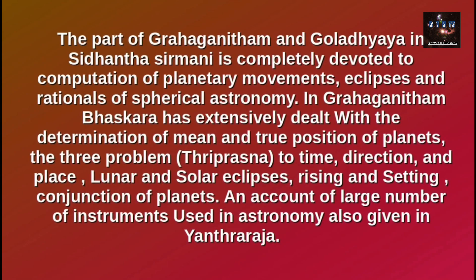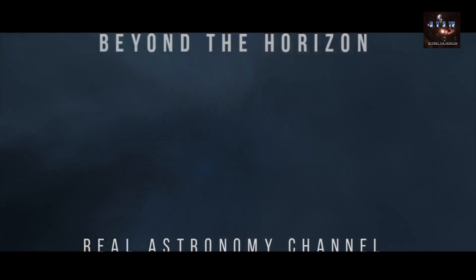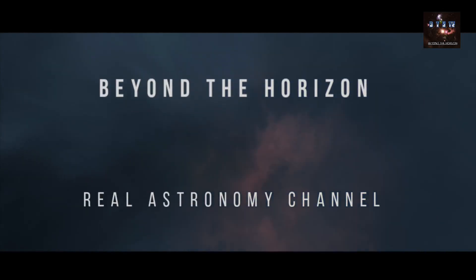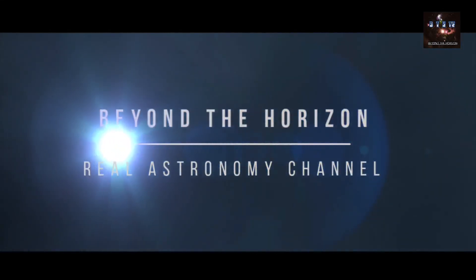The parts of Grahaganita and Goladhyaya in Siddhanta Shiromani are completely devoted to computation of planetary motions, eclipses, and the rationale of spherical astronomy. In Grahaganita, Bhaskara has extensively dealt with the determination of mean and true positions of planets. The three problems — Tri-Prasna, meaning time, direction, and place — lunar and solar eclipses, rising and setting of planets, and a large number of astronomical instruments are also covered. Thank you very much.